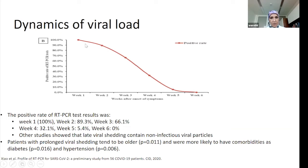The sensitivity of RT-PCR is almost maximal during week one, then decreases — by week four it is diminishing, and by week six it is very low.